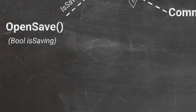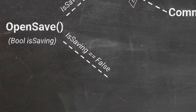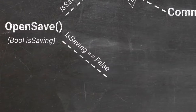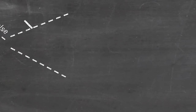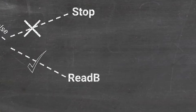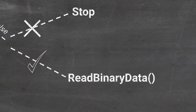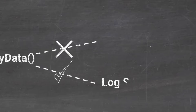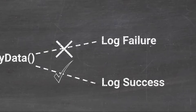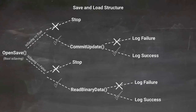We start with the same OpenSave method, but this time our bool flag is marked as loading. Once we get a successful callback confirming we've connected to the cloud, we use a method called ReadBinaryData, which opens the save file and tries to read the data. There's a callback in there as well, ensuring data was successfully read, and then all we do is reverse what we did in the saving method — convert the data from a byte array back into our game data types.